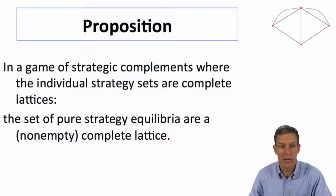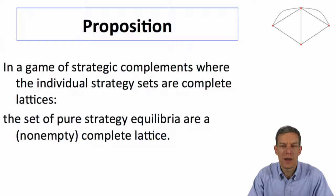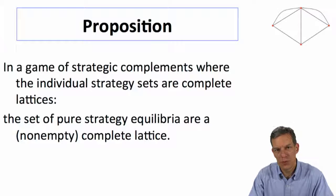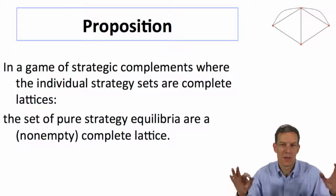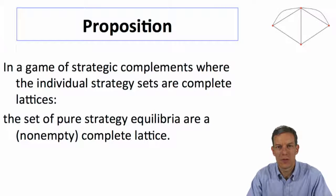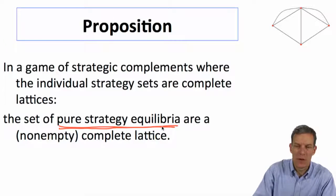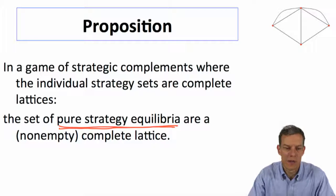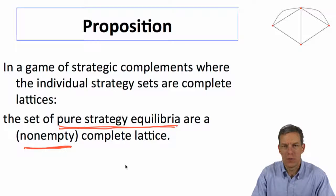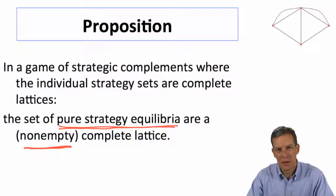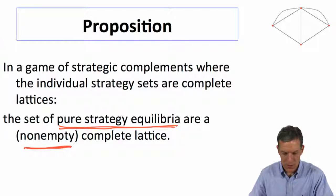That's going to be quite useful in terms of the structure of games of complements. In particular, there's a proposition that says if we're looking at a game of strategic complements where the individual strategy sets are each complete lattices, then the set of pure strategy equilibria form a non-empty complete lattice. This is a theorem from standard game theory. As a corollary, there always exists a pure strategy equilibrium in games of complements, because complete lattices have to be non-empty. So that comes for free.